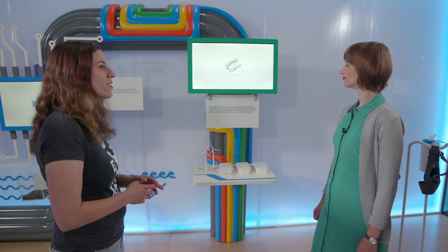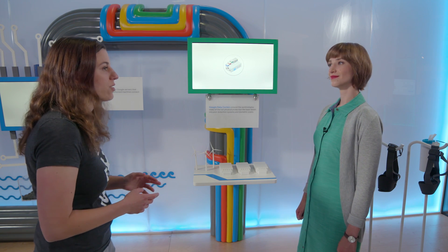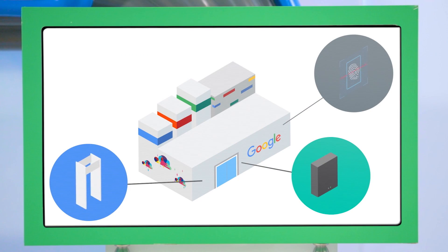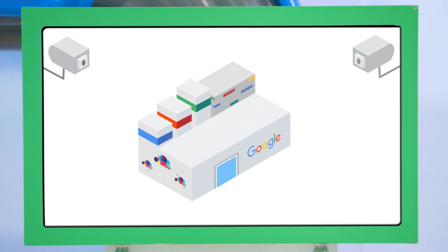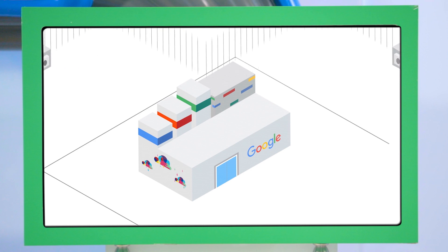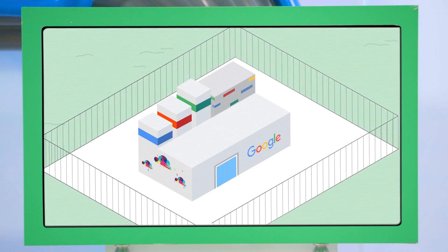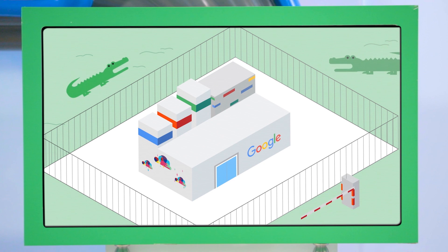These servers sit in Google-owned data centers. The physical security of these data centers is yet another level of protection. Google data centers include metal detectors, secure access cards, and biometric scanners. Data centers are monitored 24/7 by high-resolution interior and exterior cameras, have large fences, some threatening local wildlife like alligators in certain locations, and vehicle access barriers to protect against unauthorized entrance.